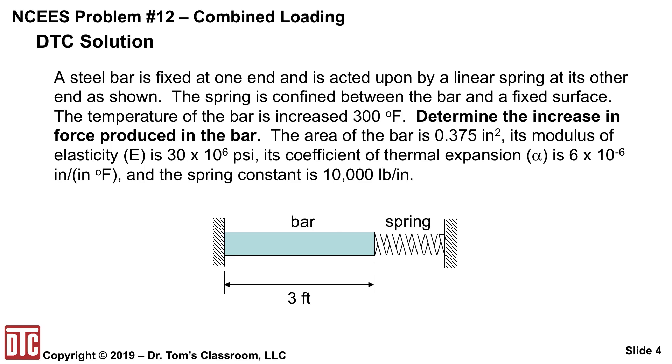Basically the statement of the problem is you've got a steel bar, it's fixed at one end on the left and is acted upon by a linear spring at its other end as shown. The spring is confined between the bar, which that end of it is allowed to move, and a fixed surface on the right. The temperature of the bar is increased 300 degrees F. The question is, determine the increase in the force produced in the bar.